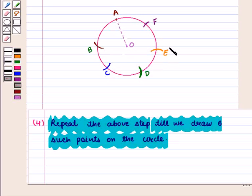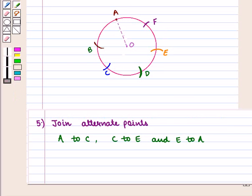And let us label the remaining points as E and F. Now, we have labeled the points as B, C, D, E and F.